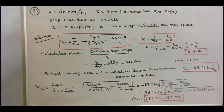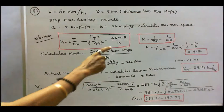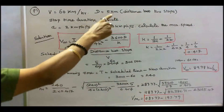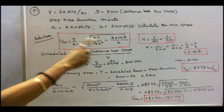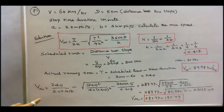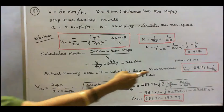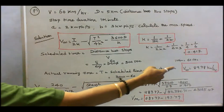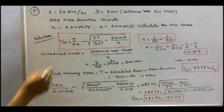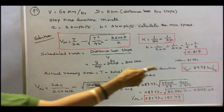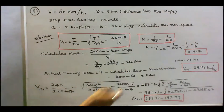Substituting all values into the formula, the maximum speed of the train Vm = 89.98 km per hour.